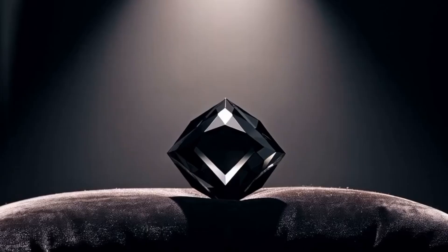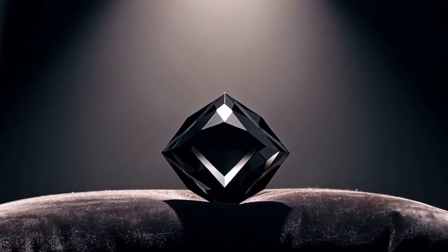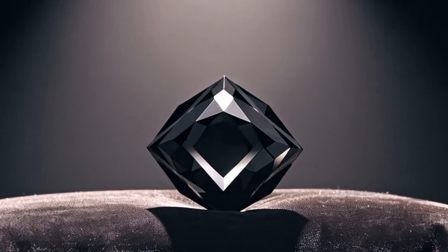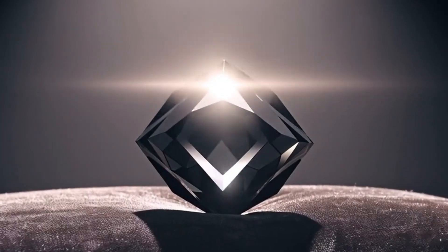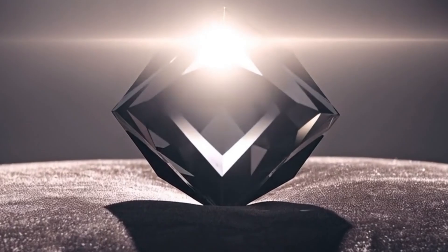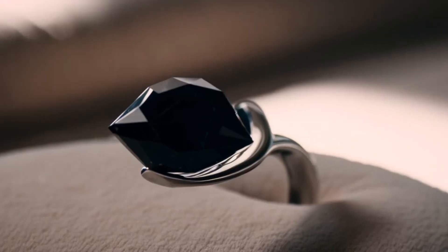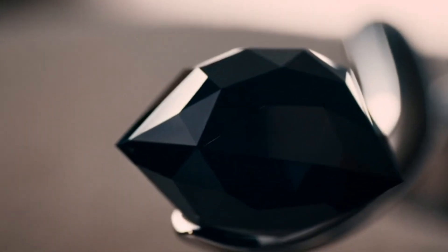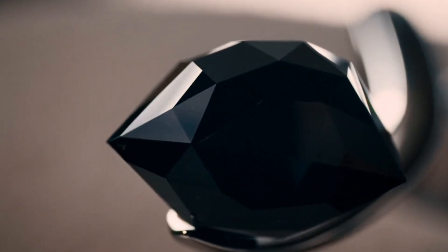Conclusion. Identifying a black diamond at home is a quiet detective story. You observe its stubborn darkness, test its resilience, and listen to the clues in its texture. When several signs align—extreme hardness, deep opacity, rough grainy texture, high density, heat resistance—then you may be holding a genuine piece of carbonado. Laboratory testing remains the final confirmation, but these home methods bring you remarkably close.